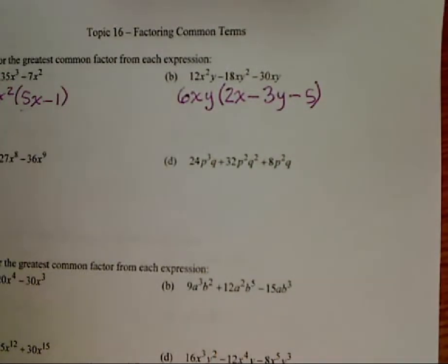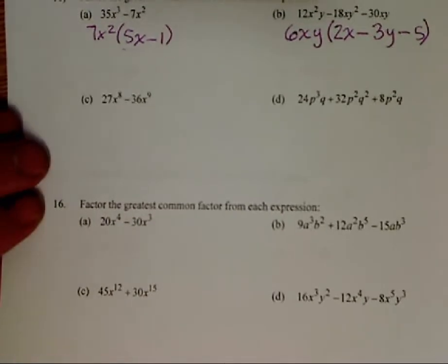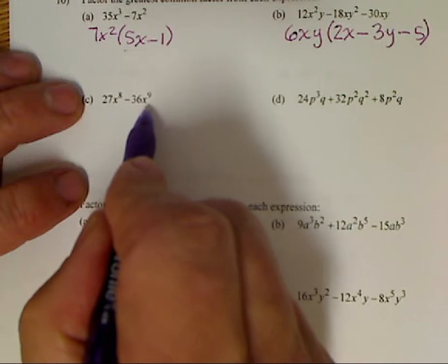Now these will not factor any further. That's what the design is on this particular problem. Okay, so we look at this next one. This is 27x to the 8th minus 36x to the 9th.